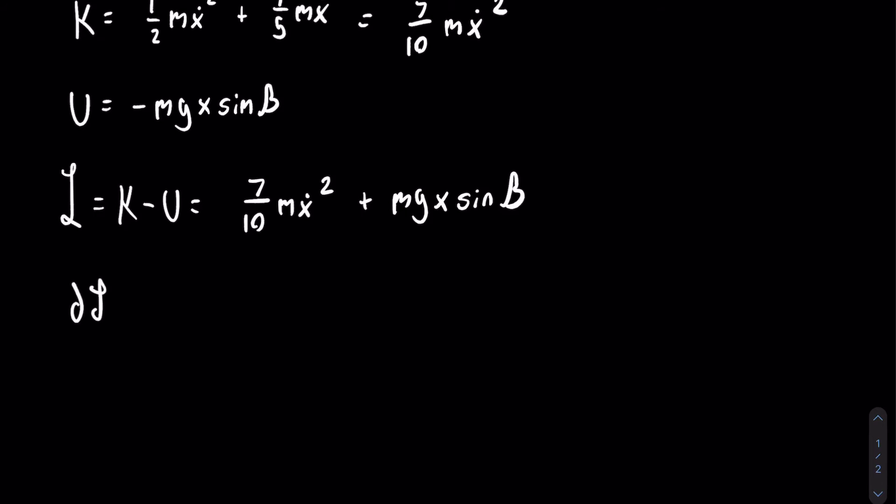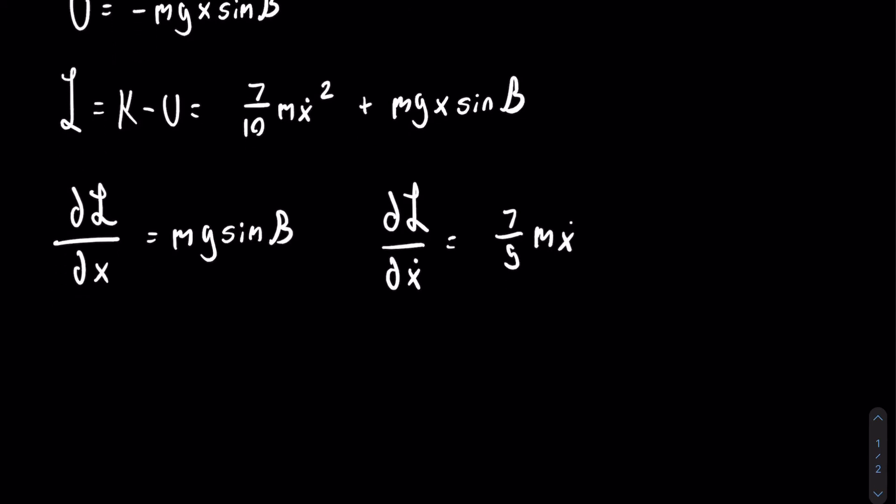So the first thing that we do is we take the partial of the Lagrangian with respect to x. So there is no x in the first term, only in the second term, and from that we get that the partial is equal to mg sine of beta. Then we can do the partial of the Lagrangian with respect to x dot. There is no x dot in the second term, only in the first term, and we can use the power rule, and we will get that this is equal to seven-fifths m x dot. Lastly, we can take the derivative with respect to time of the partial of the Lagrangian with respect to x dot, and that is equal to seven-fifths m x double dot.